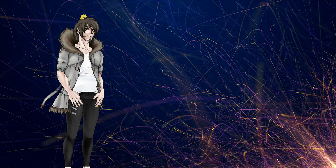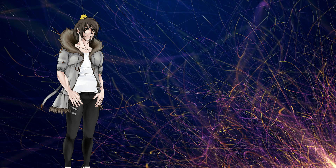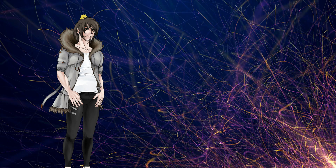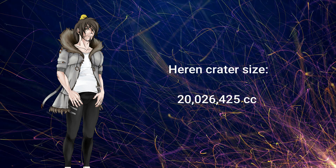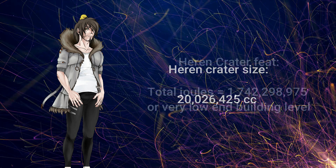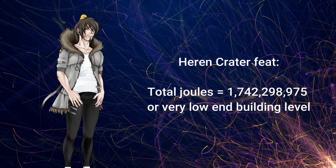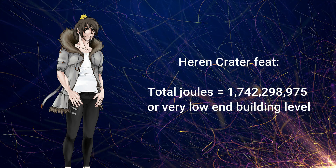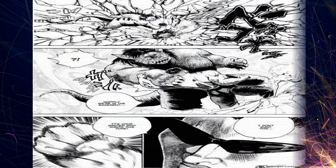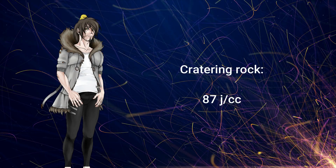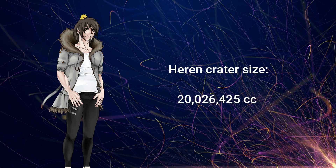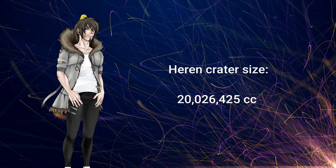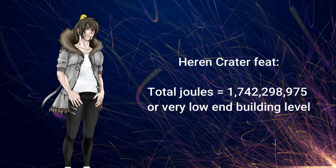To lowball it, we'll just pretend that Heron actually directly struck the ground, meaning we're looking at a crater of this many cubic centimeters in volume, putting the total joules at this many — very low end building level — as cratering is 87 joules per centimeter cubed. Since we have the amount of cubic centimeters of volume for the crater, it's easy math.